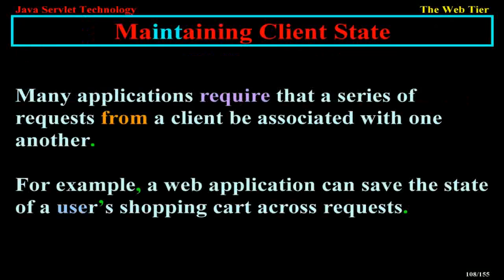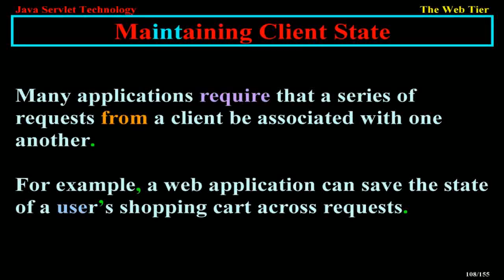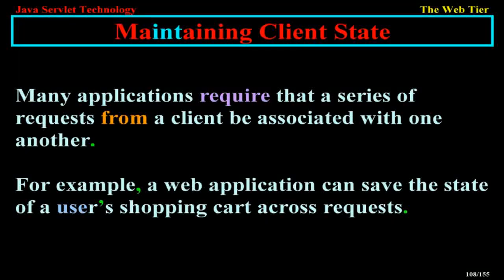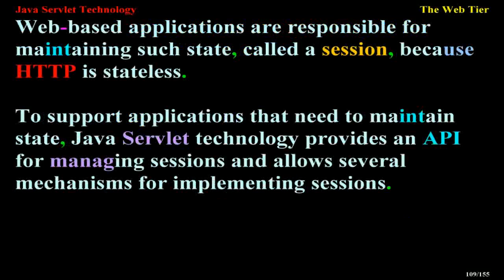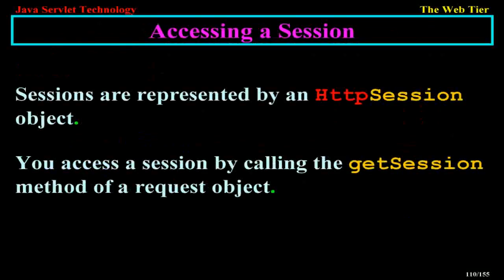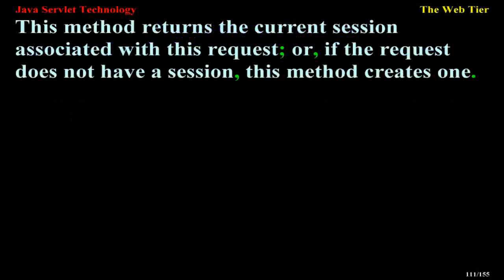Maintaining client state. Many applications require that a series of requests from a client be associated with one another. For example, a web application can save the state of a user's shopping cart across requests. Web-based applications are responsible for maintaining such state, called a session, because HTTP is stateless. To support applications that need to maintain state, Java servlet technology provides an API for managing sessions and allows several mechanisms for implementing sessions. Sessions are represented by an HttpSession object. You access a session by calling the getSession method of a request object, which returns the current session associated with this request, or if the request does not have a session, creates one.